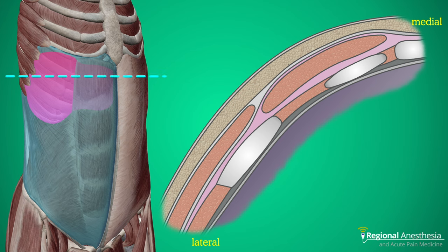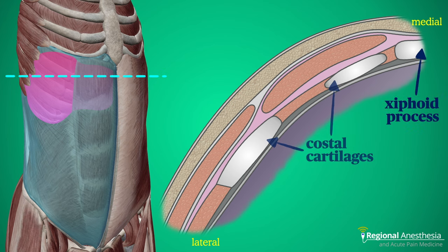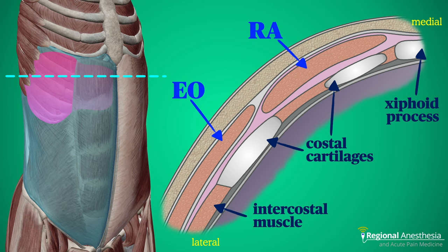Let's look at that anterior anatomy a little closer. Here we see a cut through the chest at the level of the xiphoid process. We see the costal cartilages and intercostal muscle between them. Near the midline, we have that upper portion of rectus abdominis and more laterally the external oblique muscle. The fascia of the external oblique merges anteriorly and forms the anterior rectus sheath at this level, leaving a passageway for the local anesthetic placed here to run forward and enter the rectus sheath.